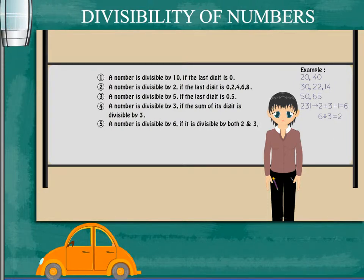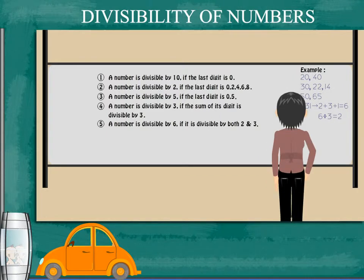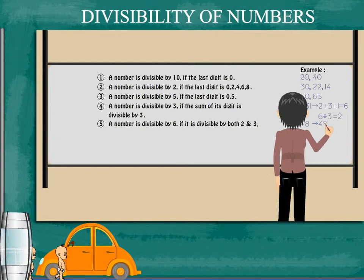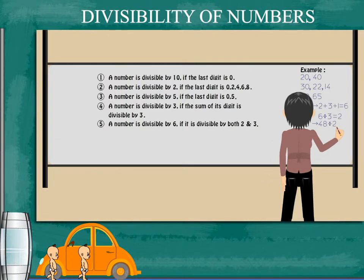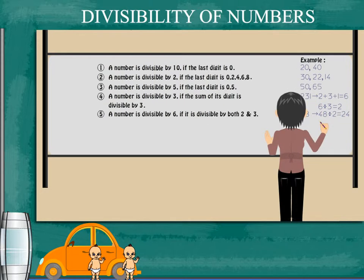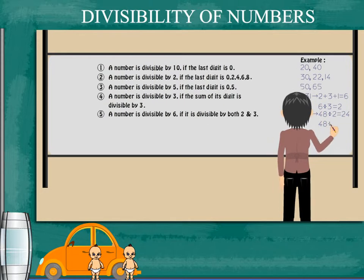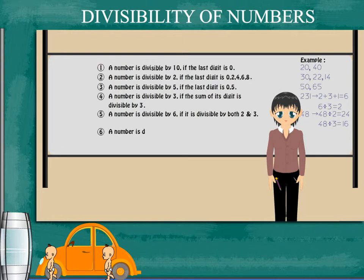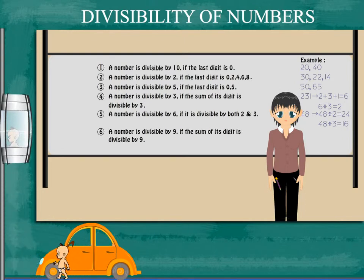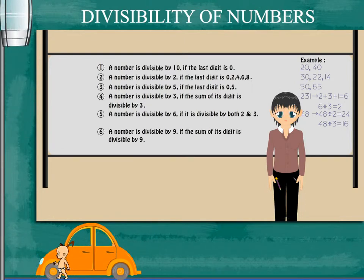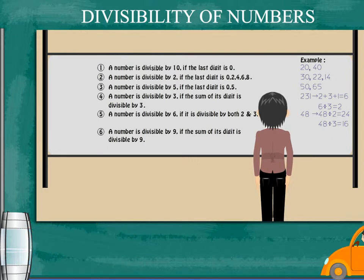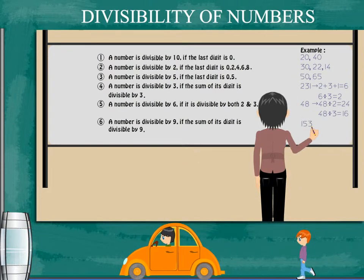A number is divisible by 6 if it is divisible by both 2 and 3. For example, 48: 2 divides 48 and 3 also divides 48 completely. A number is divisible by 9 if the sum of its digits is divisible by 9.